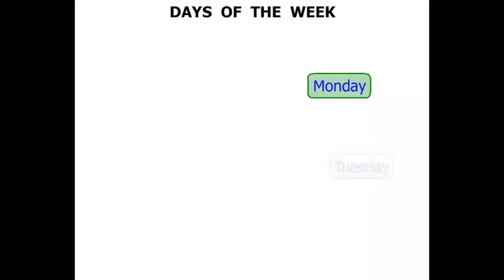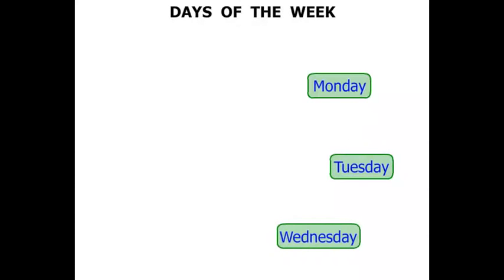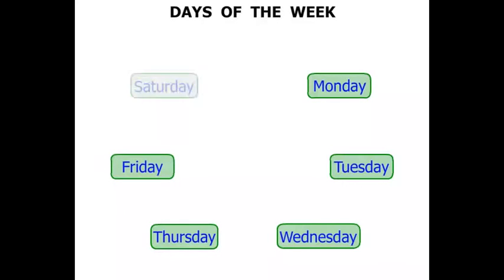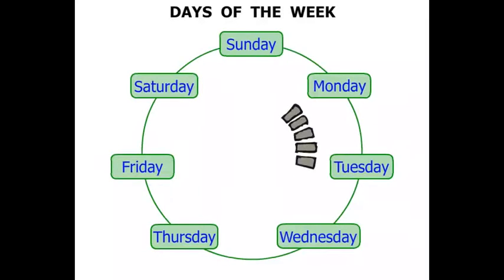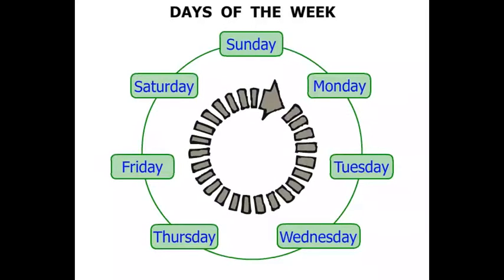Days of the Week: Monday, Tuesday, Wednesday, Thursday, Friday, Saturday, Sunday. The seven days of the week, and they go around in that cycle. That's one week.